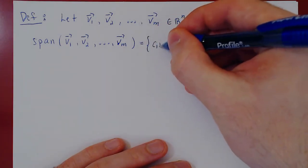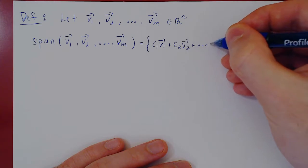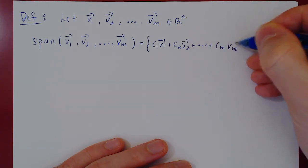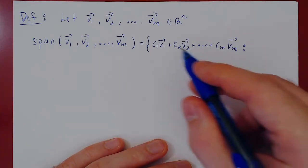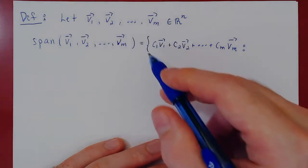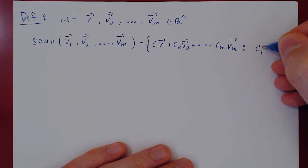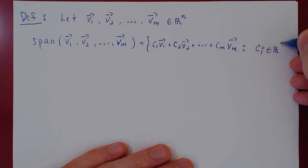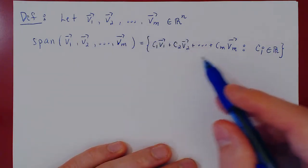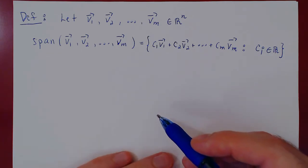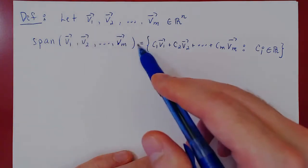Specifically, it's some multiple of v1, plus some multiple of v2, up to some multiple of vm. We take all possible linear combinations of the m vectors v1 through vm. These are fixed vectors, and c1, c2, up to cm are allowed to range over all real numbers. So the span is the set of all vectors that can be generated with these fixed m vectors.